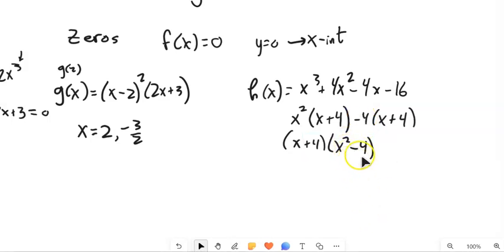That leaves me an x squared minus a four. Here's the difference of squares. So I could factor this. So it looks like my zeros would be what makes this a zero negative four. What makes this a zero negative two? What makes this a zero positive two?